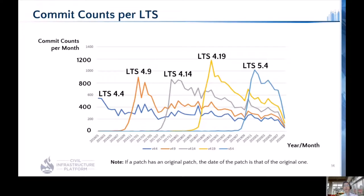This graph shows the growth trend of commit counts for each stable release. As you can see, a few hundred patches are committed to each stable release per month. This trend makes cherry-picking quite difficult. Because CIP is aiming for long-term maintenance, the upstream-first model is our desired approach.